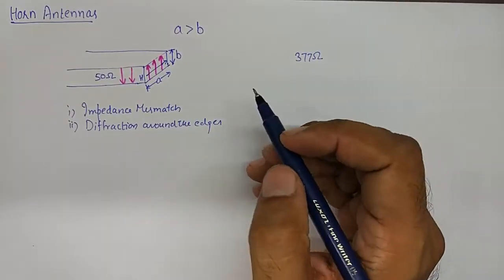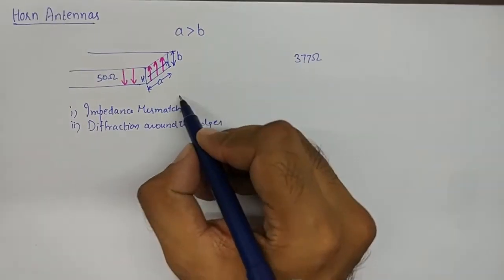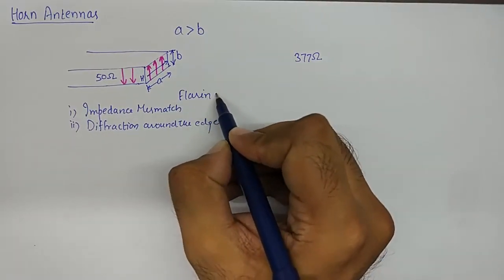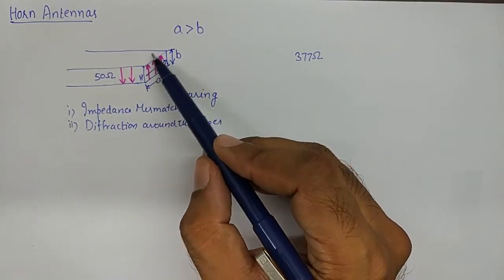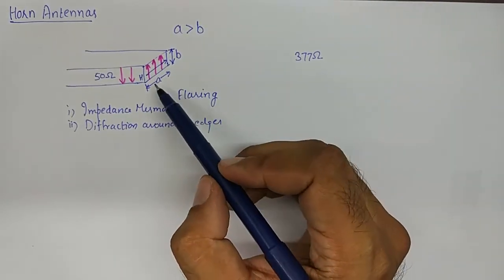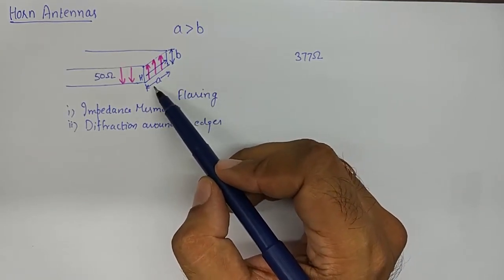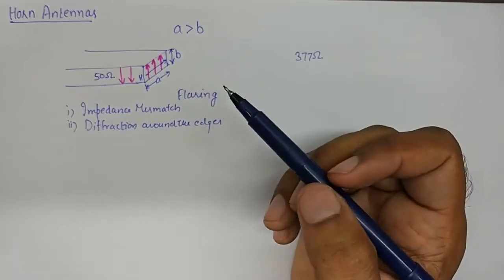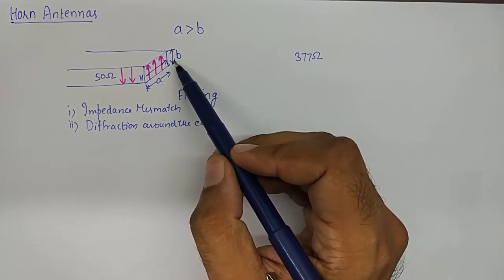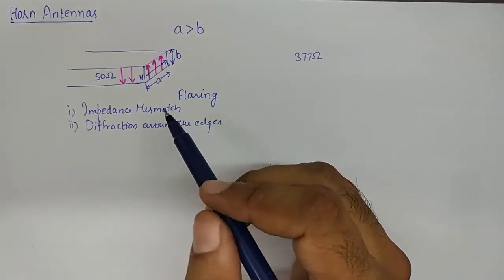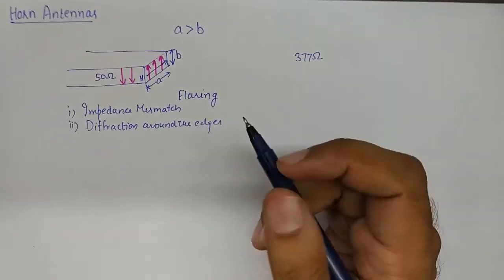To convert a rectangular waveguide to a horn, we use a process known as flaring — gradually increasing the dimensions of the opening of the waveguide. The waveguide has dimensions A by B. If we gradually increase A, it results in one form of antenna. If we gradually increase B to capital B, it results in another form. And if we increase both A and B gradually, it results in a third form of antenna known as the pyramidal horn.